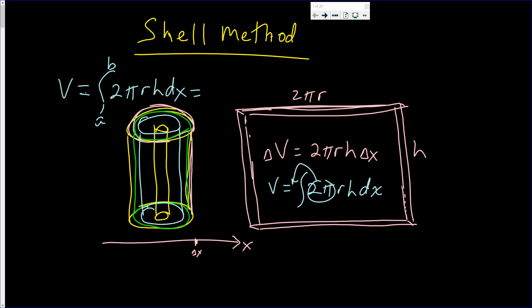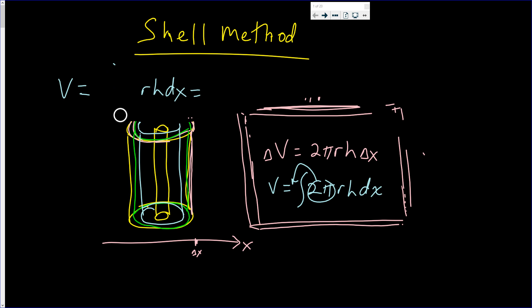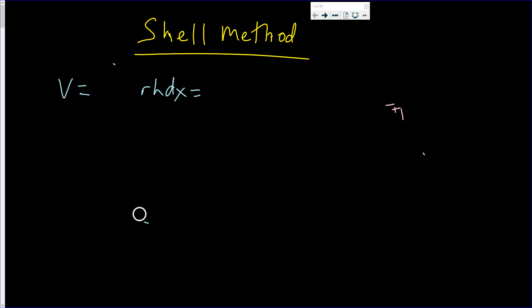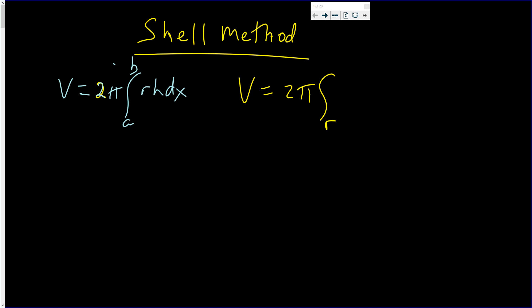Let me write it with the 2π in front. So one formula is 2π times the integral from a to b, and the other formula is v = 2π times the integral from r to s of r times h times dy. Those are the two formulas.